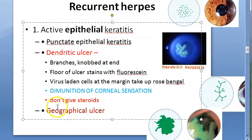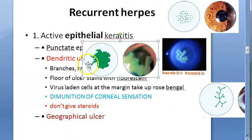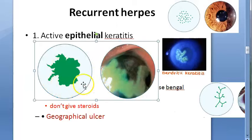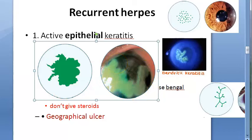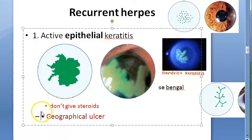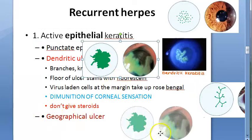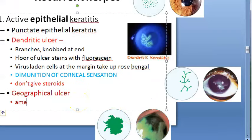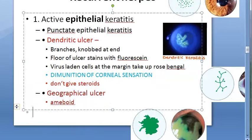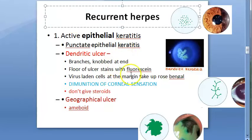Geographical ulcer looks like a map — large, amoeboid configuration. It is an advanced form of the epithelial ulcer. This completes the epithelial part of recurrent herpes.